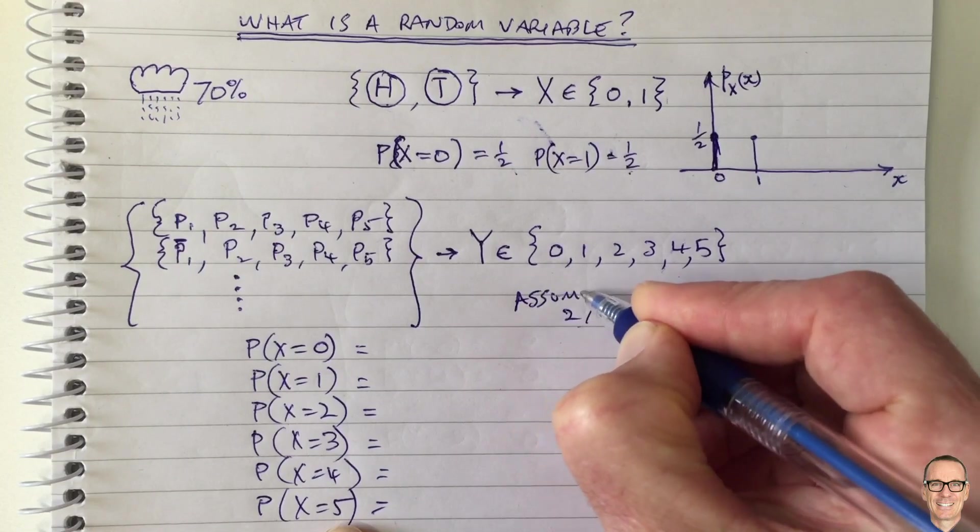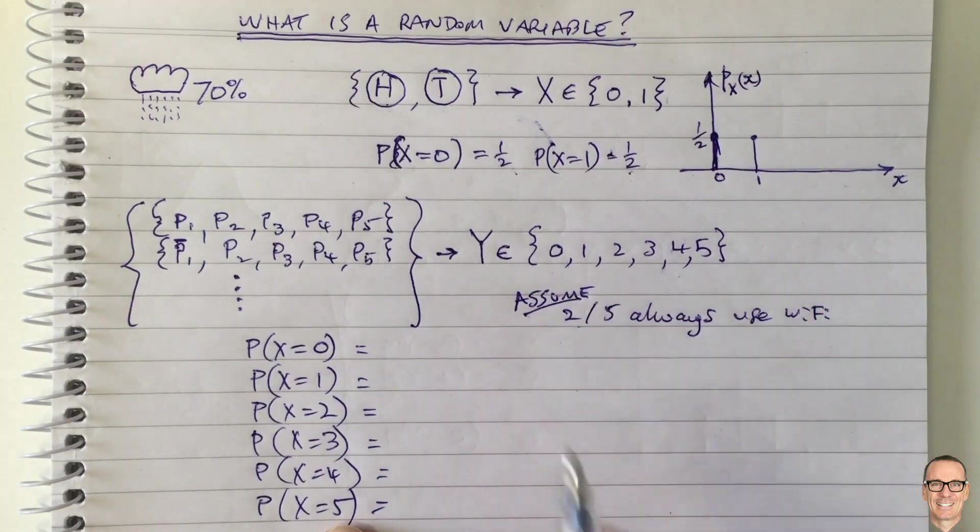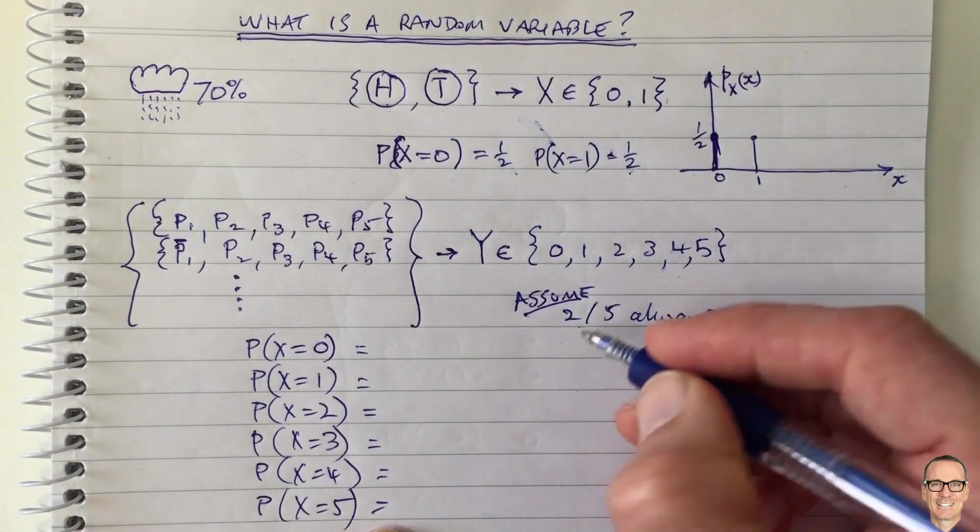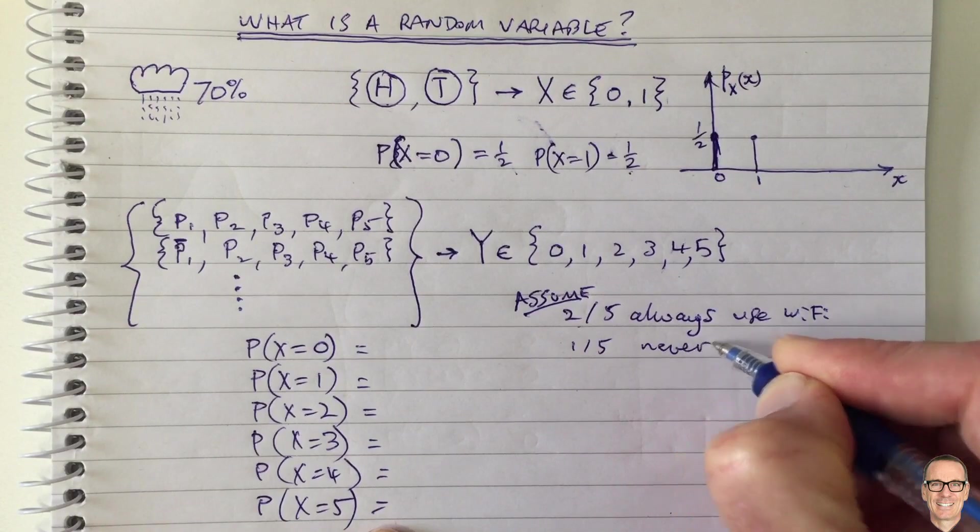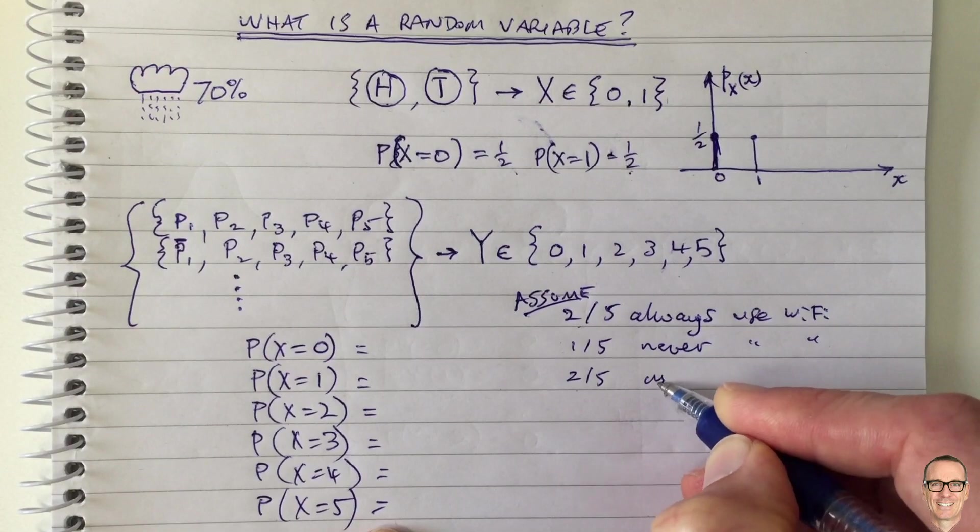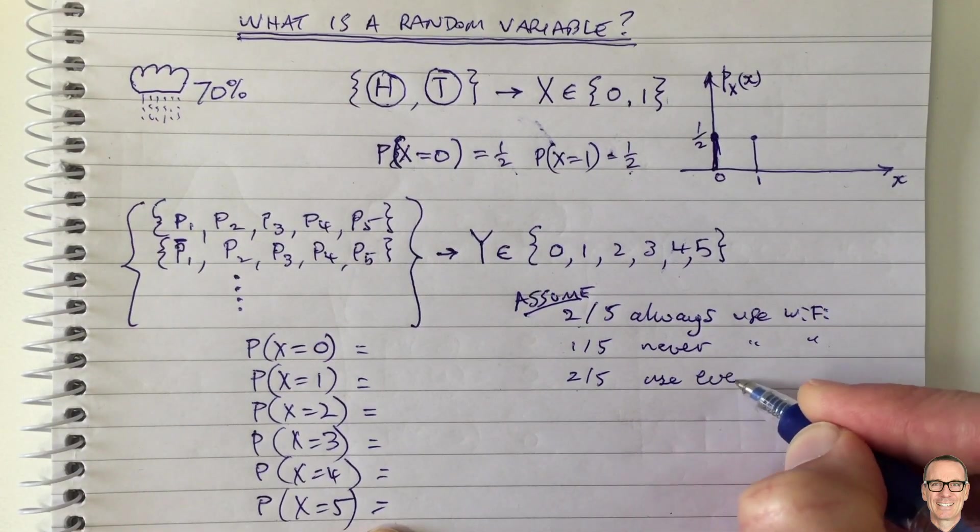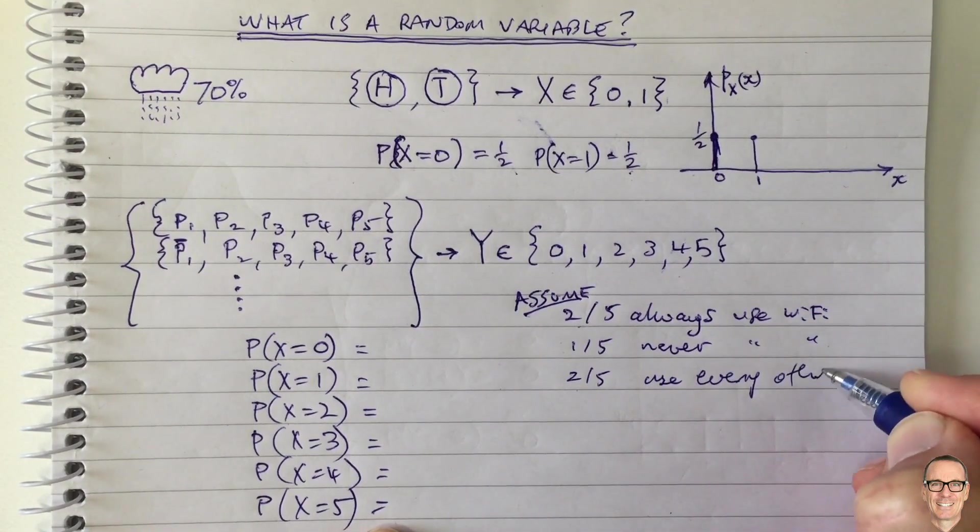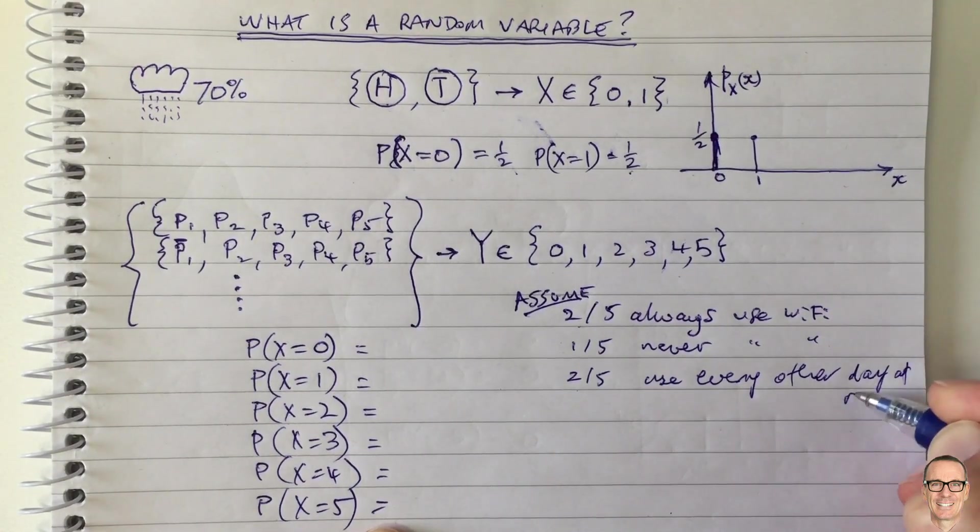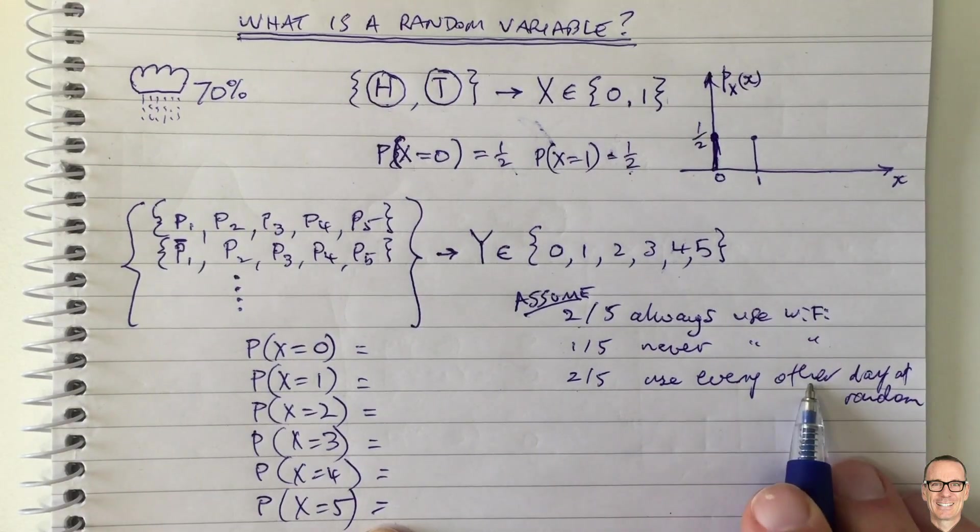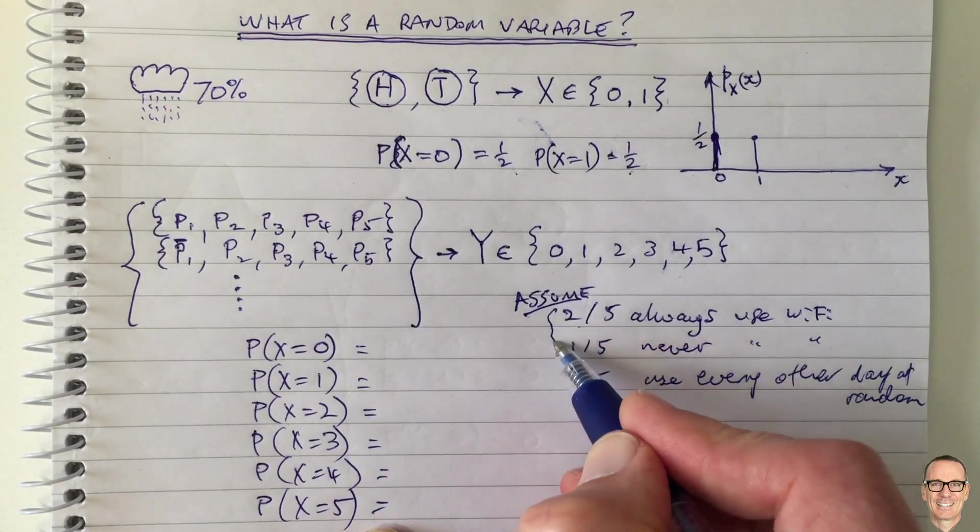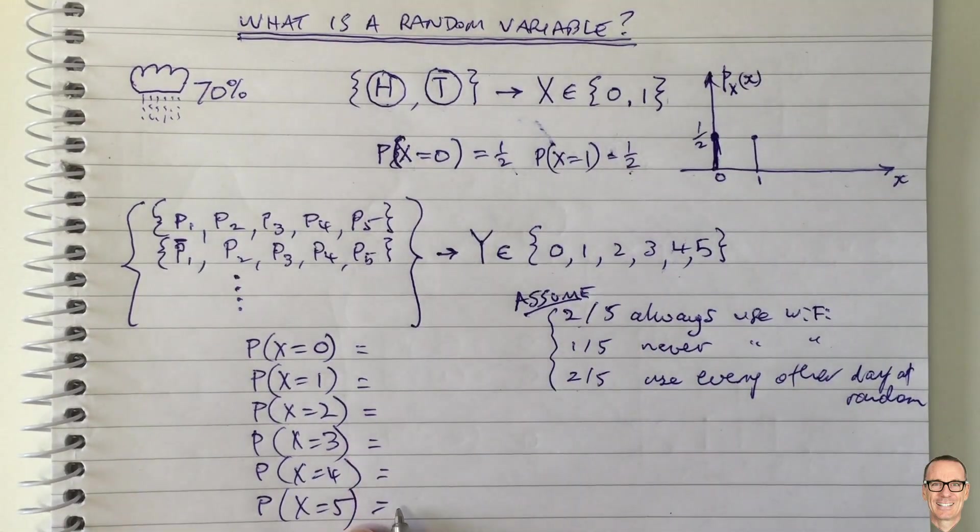So we're going to decide, in this case, one way of working out these numbers is to make some assumptions. So let's assume two out of five always use, let's assume one out of five never uses, and let's assume the other two, two out of five, use every second day or every other day randomly, or one out of every two days, every other day, let's say, at random. Maybe I should probably say they use it half the days at random.